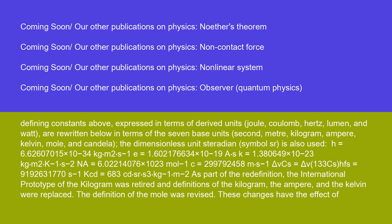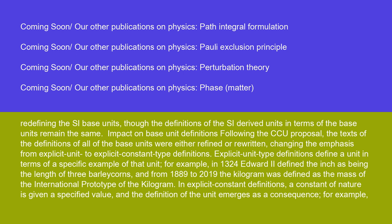As part of the redefinition, the international prototype of the kilogram was retired. The definitions of the kilogram, the ampere, and the kelvin were replaced, and the definition of the mole was revised. These changes have the effect of redefining the SI base units, though the definitions of the SI derived units in terms of the base units remain the same. Following the CCU proposal, the texts of the definitions of all base units were either refined or rewritten, changing the emphasis from explicit unit to explicit constant type definitions.